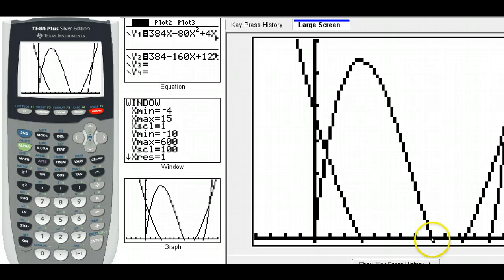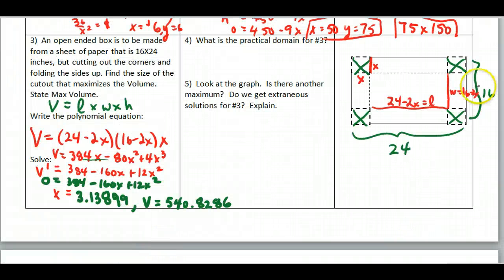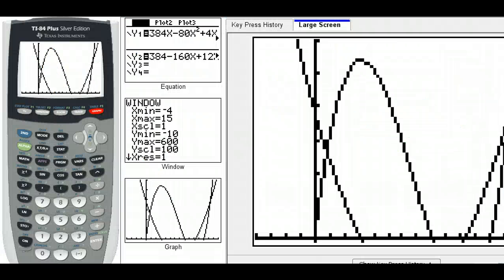Well, that's because where our volume would become zero, because I have a side of 16. And if I cut out eight and eight here, I would have nothing left to fold up. So my volume turns to zero again. So overall on the graph, I'm just looking at this piece here. So I ignore this other zero over here.